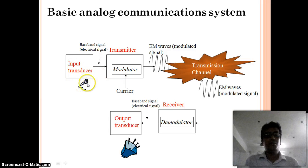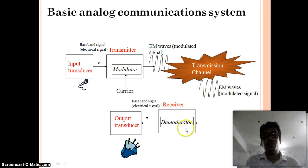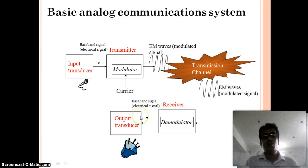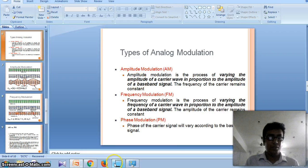As you see, a microphone is an example of an input transducer. It will convert the acoustic signal into its corresponding electrical signals. In the transmitter, it will modulate with the carrier signals. We can transmit the signal over the channel by the antenna. At the receiver, we will receive the modulating signal and demodulate it into its corresponding electrical form. Then in the output transducer, we will convert the electrical signal into its original form.